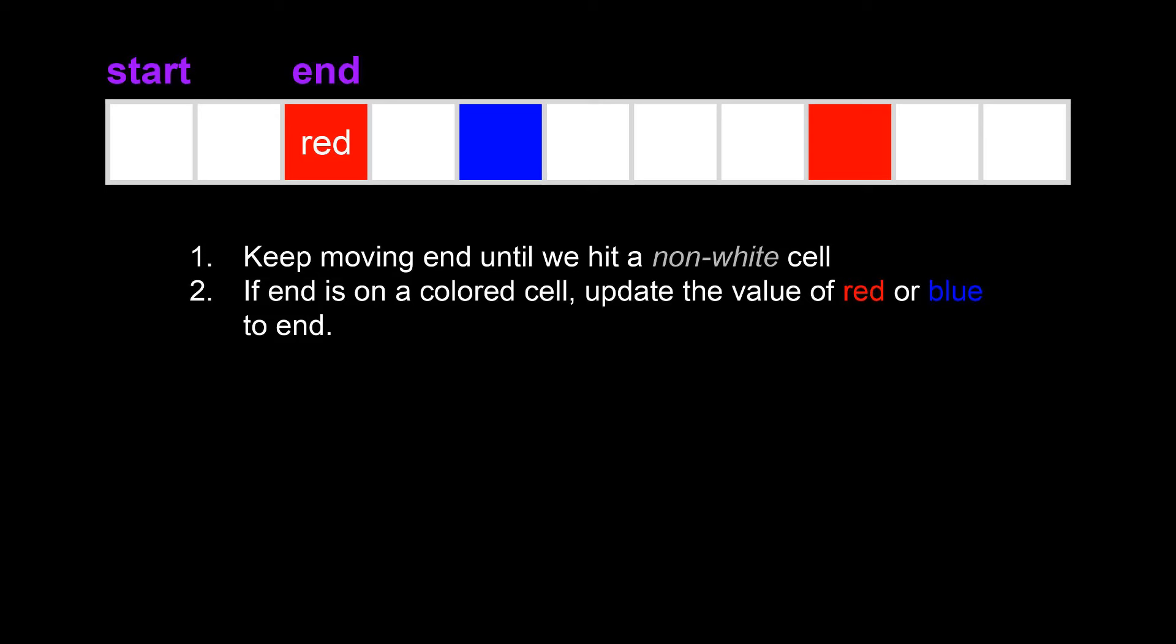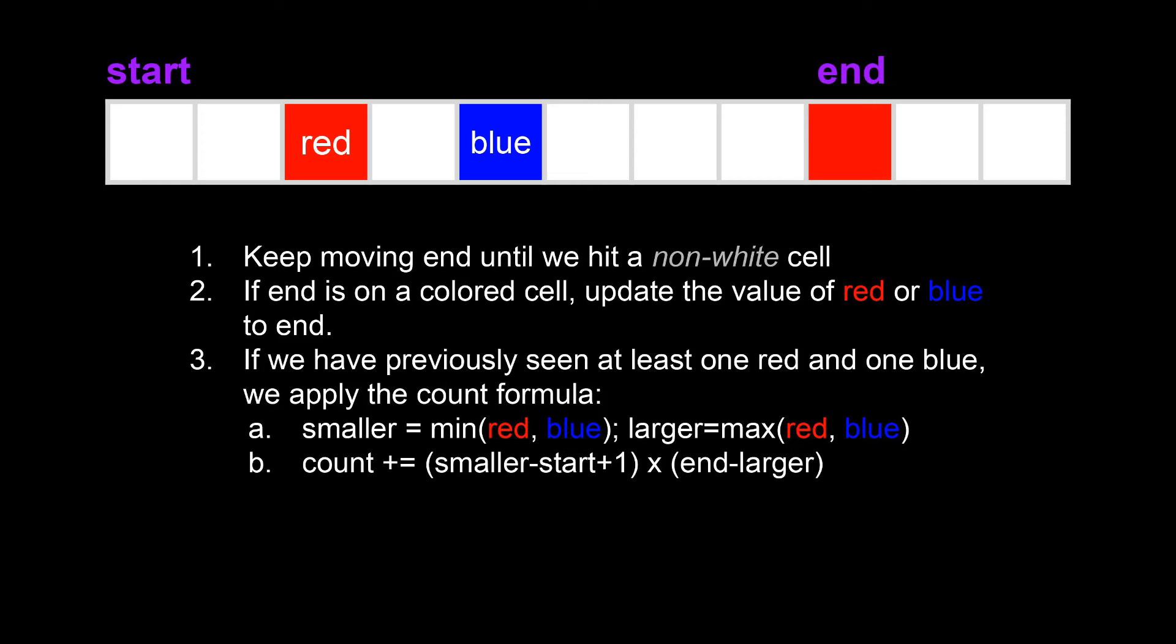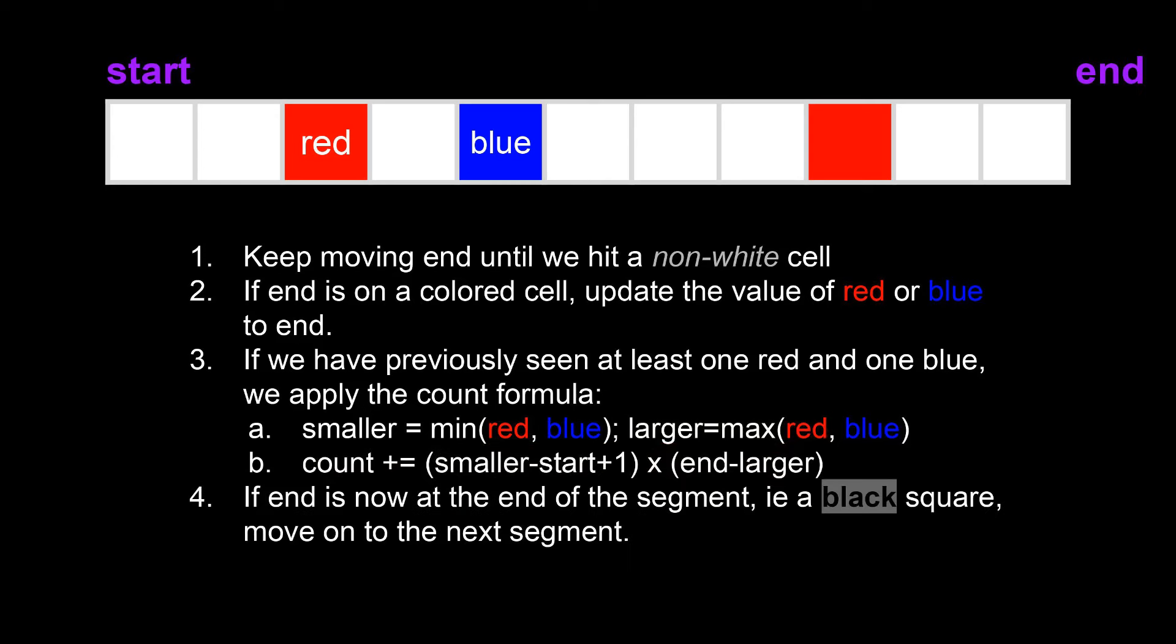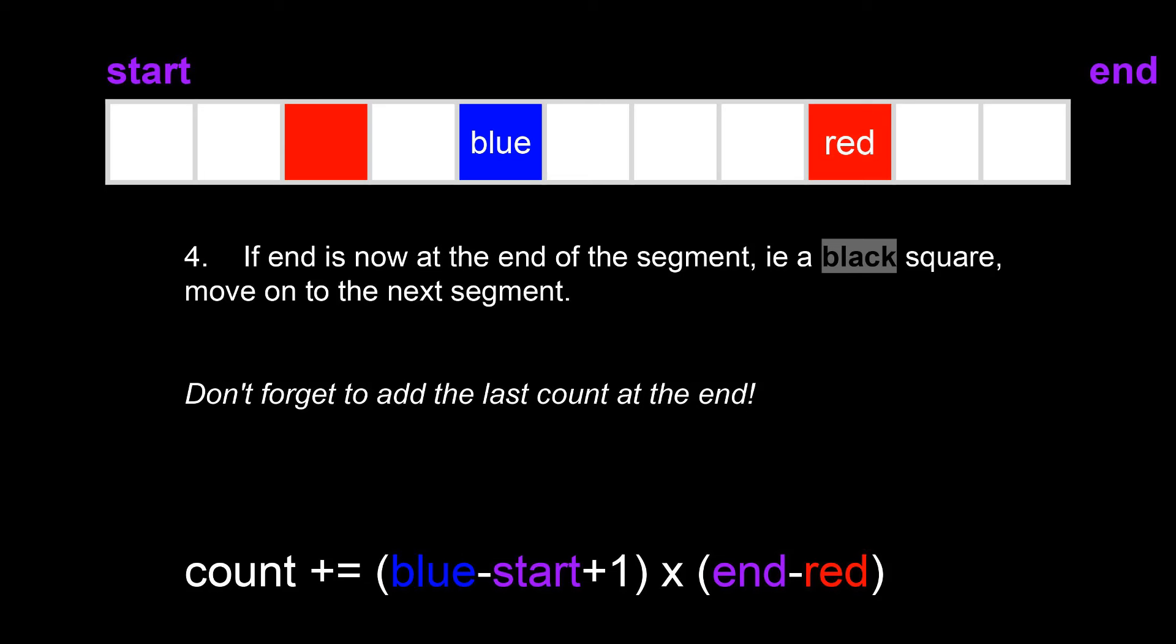How do we count the number of valid subarrays in a segment? Step 1, keep moving n until we hit a non-white cell. If n is on a colored cell, update the value of the red or blue pointer to n. If we have previously seen at least one red and one blue, then we apply the count formula. Smaller is the index that came first, larger is the index that came later. Count is equal to smaller minus start plus 1 times n minus larger. If n is at the end of a segment, i.e. a black square, this means our segment is done and we can move on to the next one. Don't forget to add the last count at the very end.